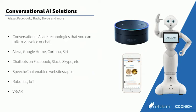Conversational AIs are technologies that you can talk to via voice or via chat. On the one hand we have digital assistants like Alexa, Google Home, Cortana, or Siri that you can talk to with your voice and that then trigger a number of actions and give a smart reply also spoken out.